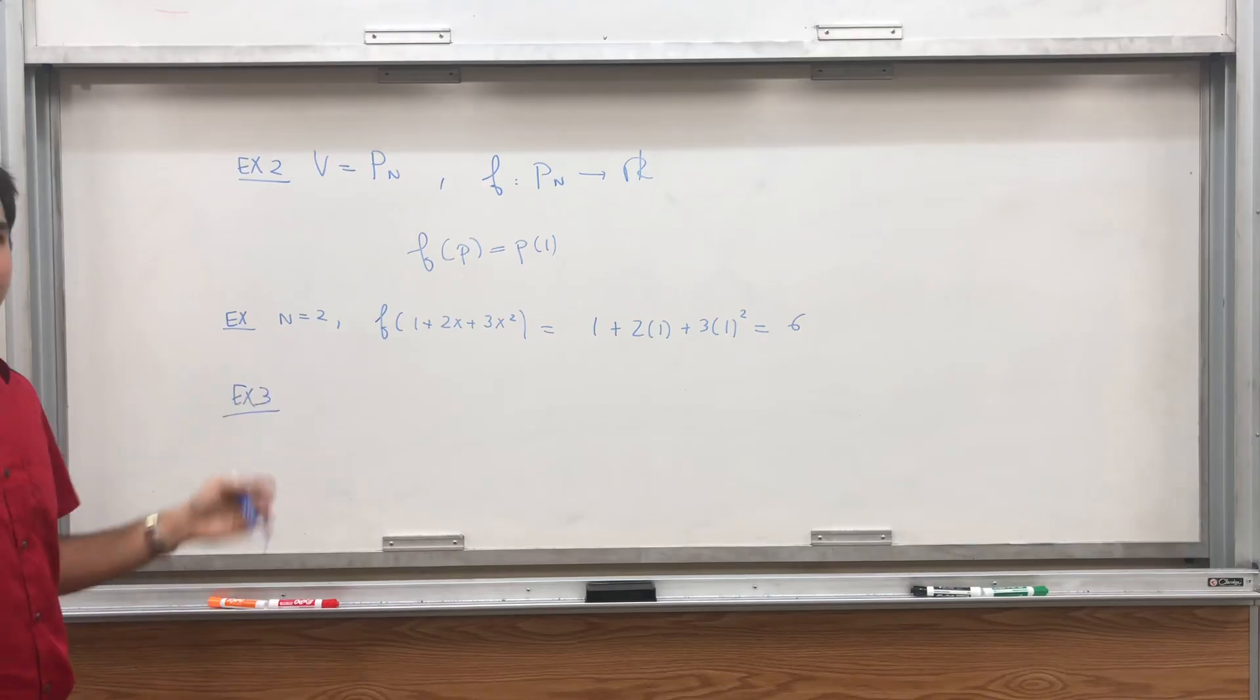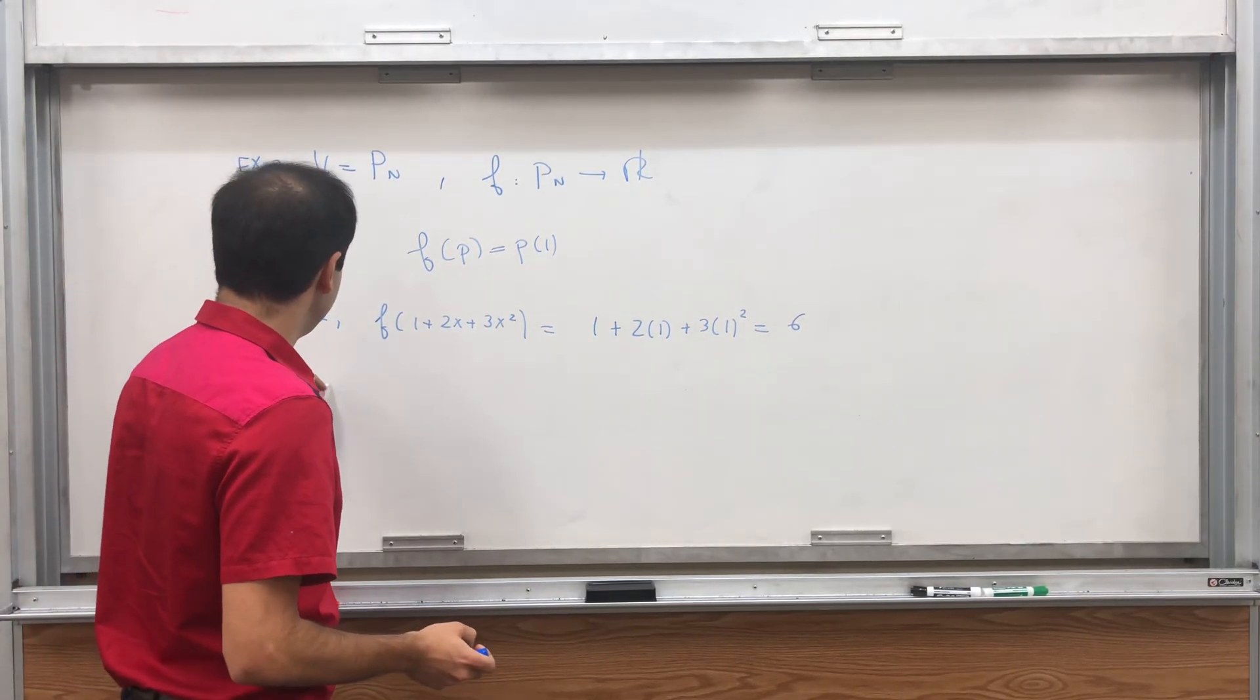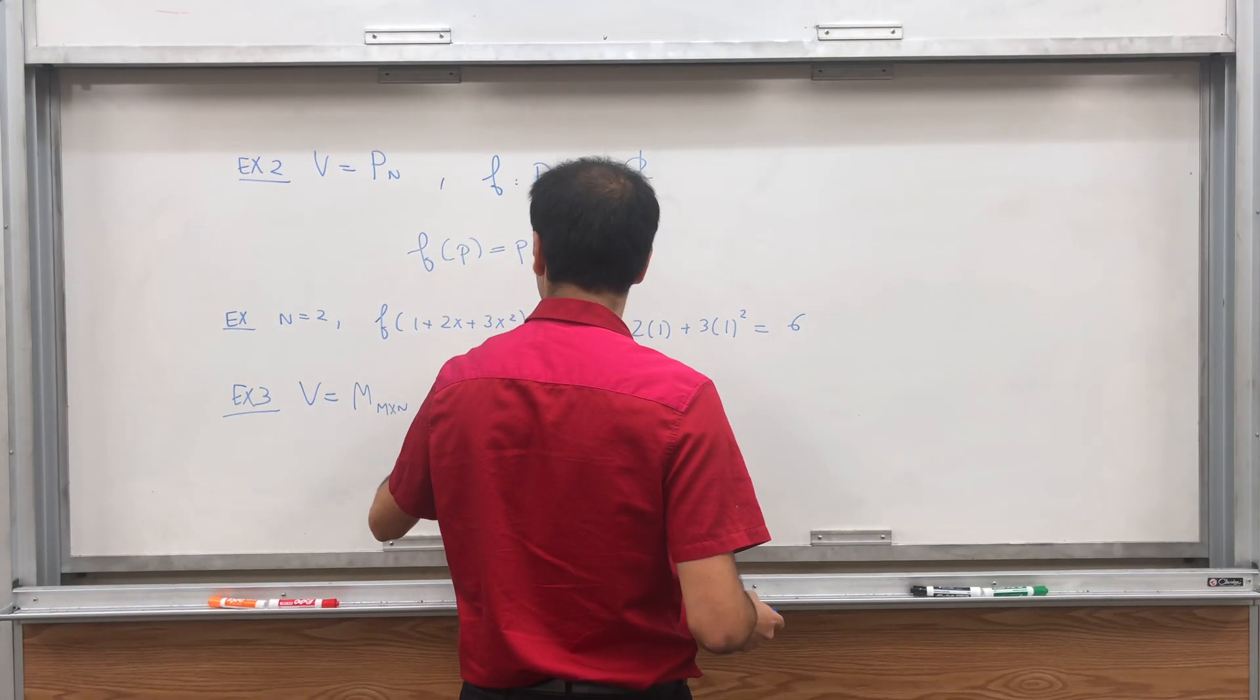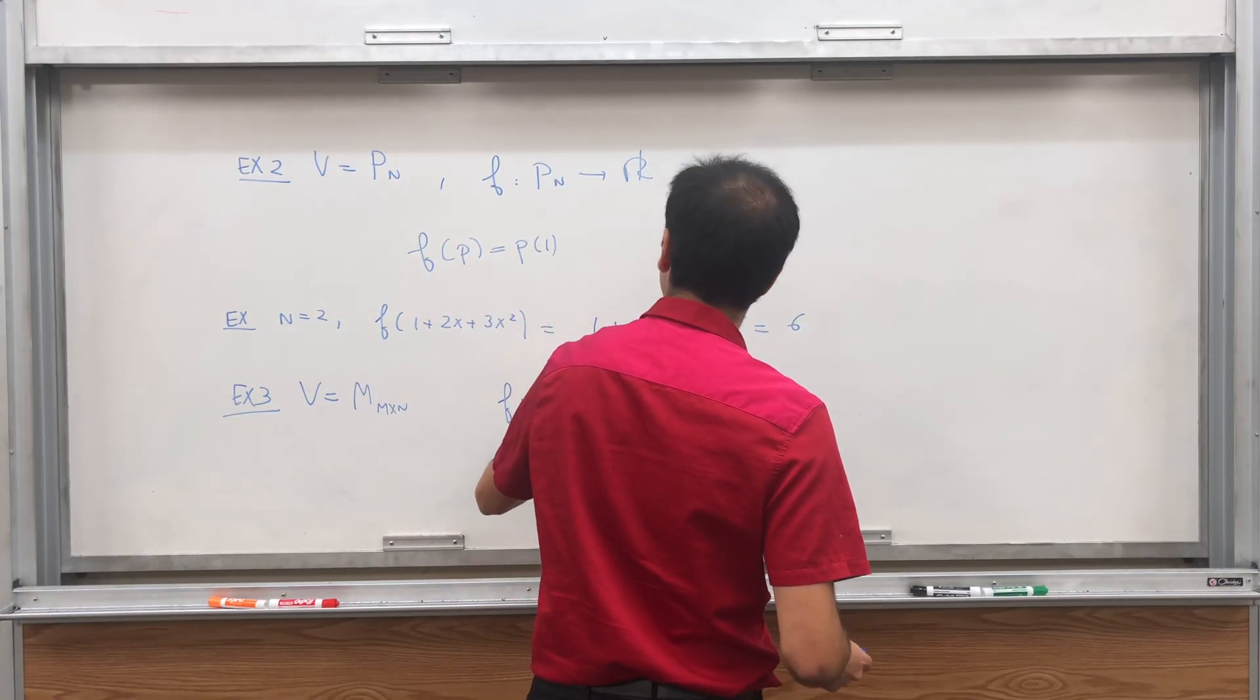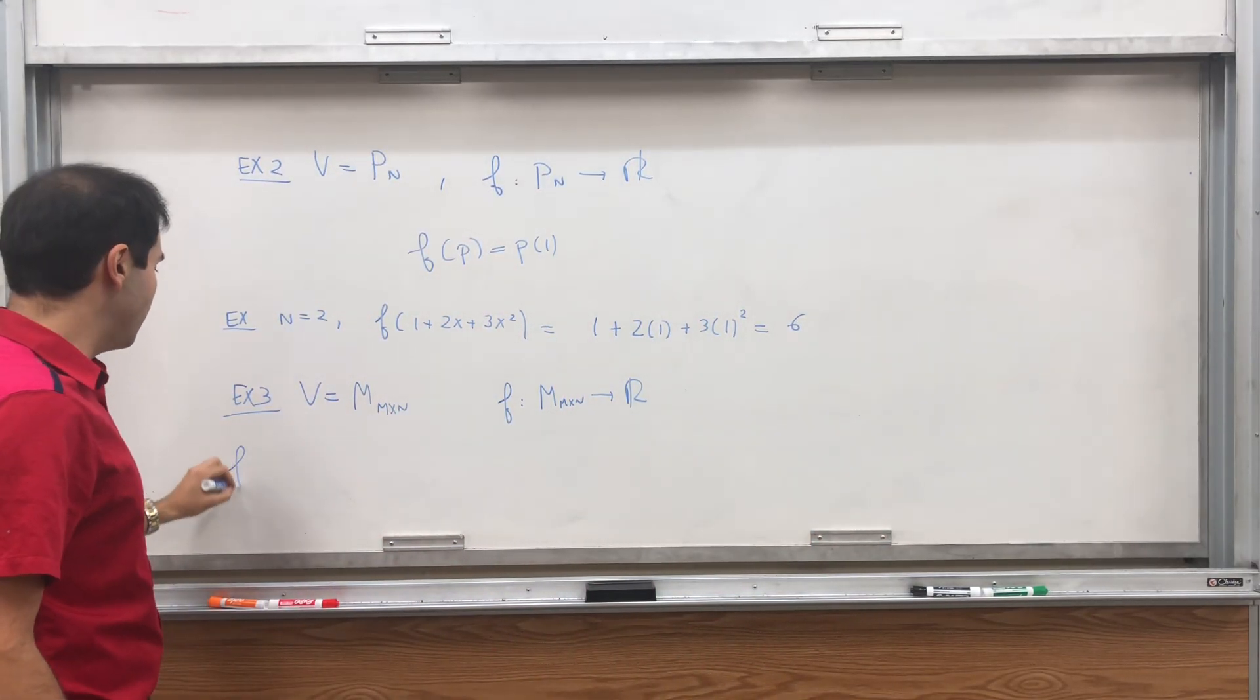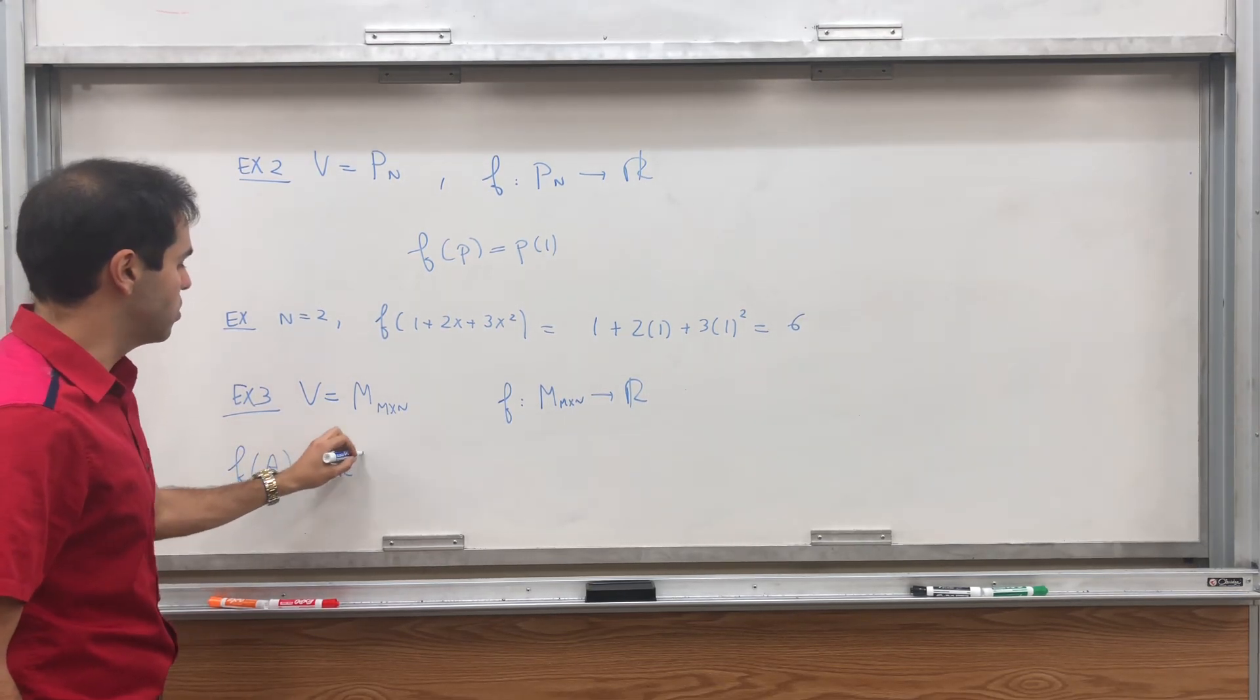And there are other examples. You can take complex numbers and complex conjugation. But what about matrices? V be the set of m by n matrices over a field. And then F goes from m by n to R, or I guess to your field, whichever this is. And F takes a matrix as an input and spits out the trace of that matrix.